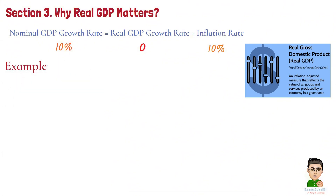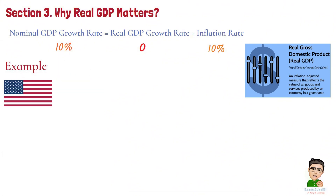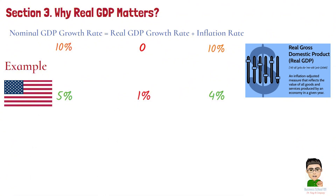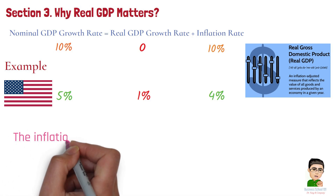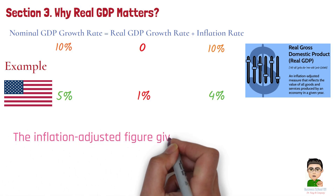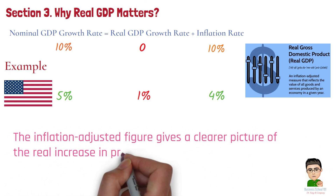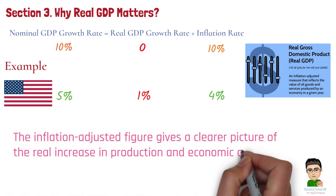For example, suppose the GDP of the US was $20 trillion last year and this year it's $21 trillion. At first glance, it looks like the economy grew by $1 trillion, or 5%. But if inflation during that period was 4%, the real GDP growth would be just 1%. The inflation-adjusted figure gives a clearer picture of the real increase in production and economic activity.